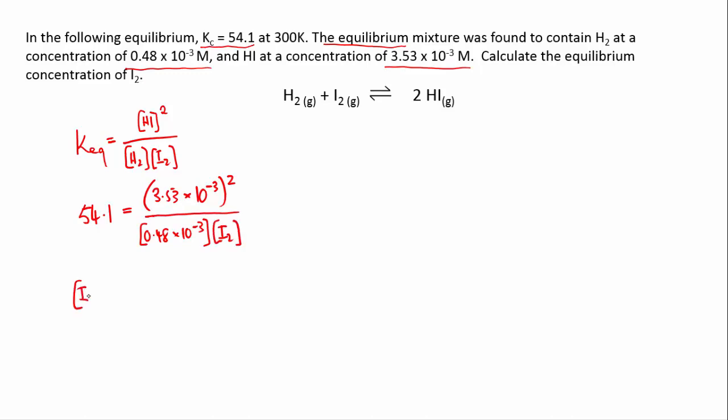If you rearrange this to make iodine the subject, you'll get an expression like this, it should be a square bracket. And if you plug that into your calculator you should get 4.8 times 10 to the minus 4 molar. Alright, so that's that one solved.